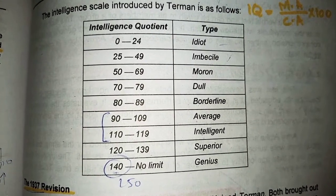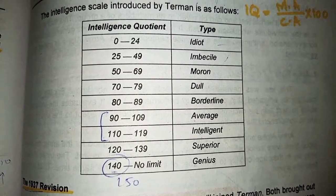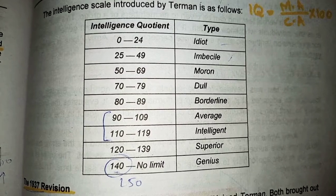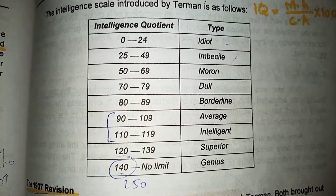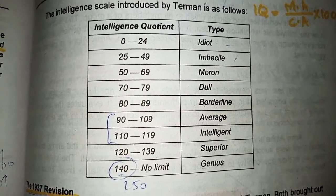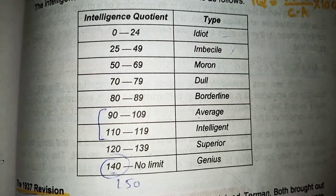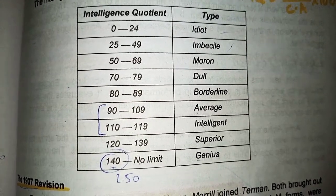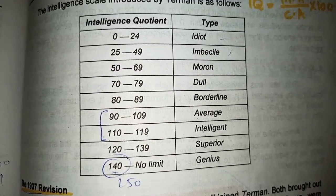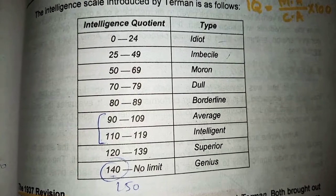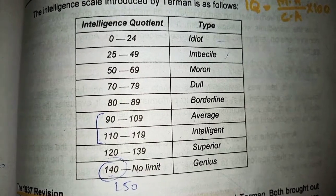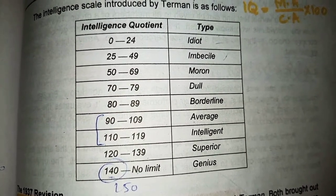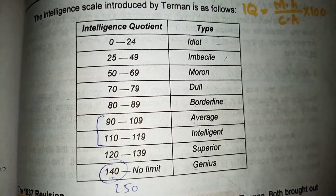Terman introduced IQ classifications: the average IQ level ranges from 90 to 109. If scores are above this range, the person is considered intelligent, superior, or gifted. If the score falls below this range, the person is considered mentally retarded and requires extra care and extra classes.